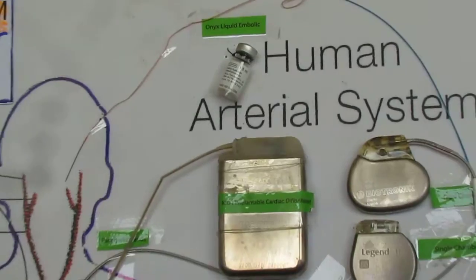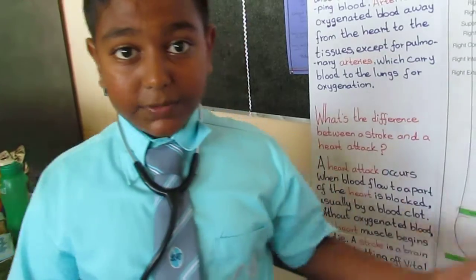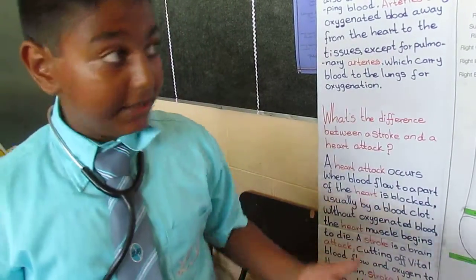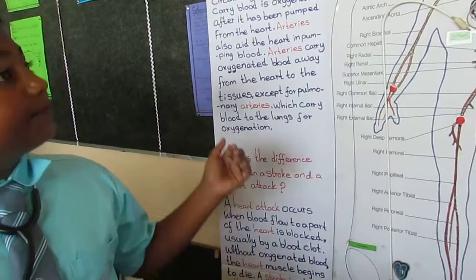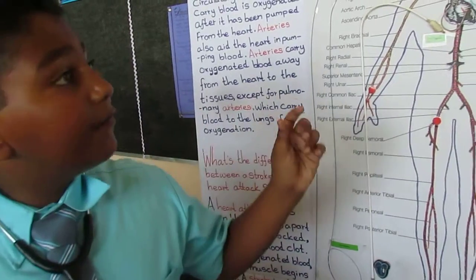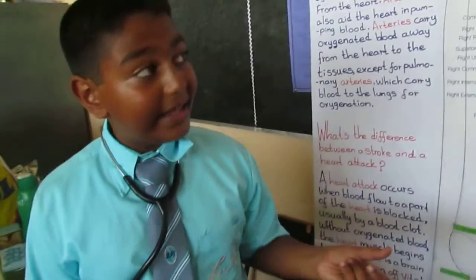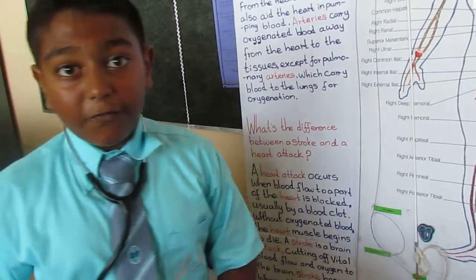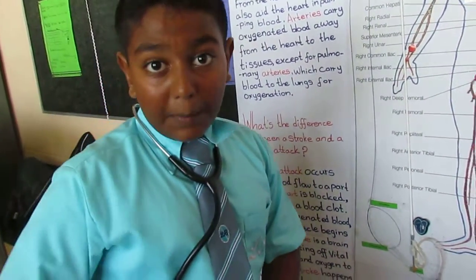Brain aneurysms are the parts which come from arteries on our brain. When it bursts, our brain starts bleeding internally, which leads to the process of dying. So it is sent with the catheter to our brain from our leg.